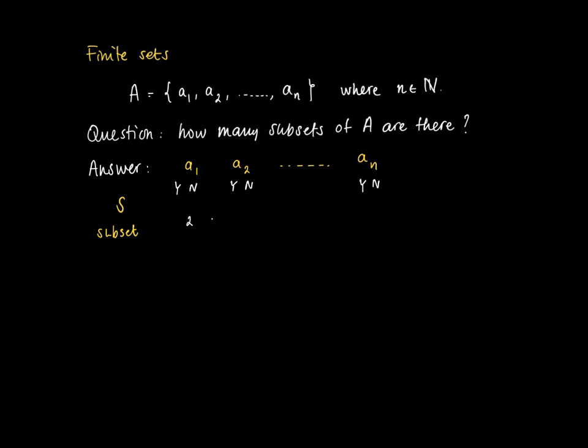So I can label the elements from S, and I get for A1, if it's contained or not, two possibilities. A2 is the same thing, until An, I have two possibilities. So in total, I can draw 2 to the power n possible subsets.